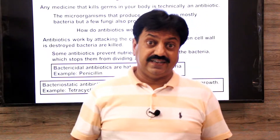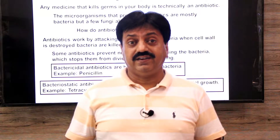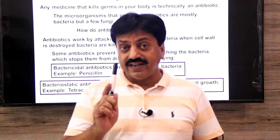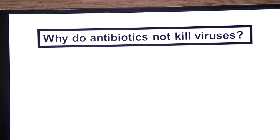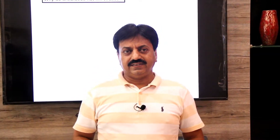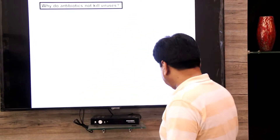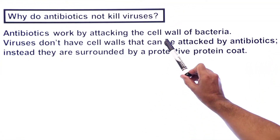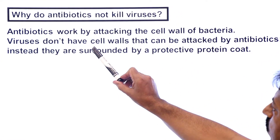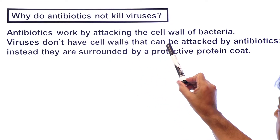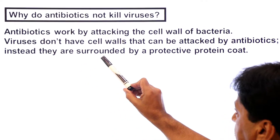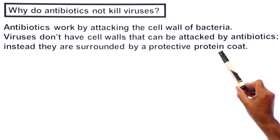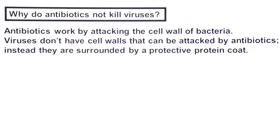An often-asked question is: antibiotics work against bacteria, but why don't they work against viruses? The answer is that antibiotics work by attacking the cell wall of bacteria, and viruses do not have a cell wall. Instead, viruses are surrounded by a protective protein coat known as a capsid, which is why antibiotics do not work against viruses.